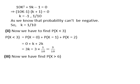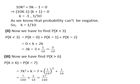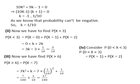In the third part, we find P(x>6). In the probability distribution, there exists only one value of x greater than 6, that is 7. So P(x>6) = P(x=7) = 7k² + k. Putting the value of k and simplifying, we get 17/100. In the fourth part, we find P(0<x<3). Two values of x exist between 0 and 3, that is 1 and 2. So P(0<x<3) = P(x=1) + P(x=2) = k + 2k = 3k = 3 × 1/10 = 3/10.